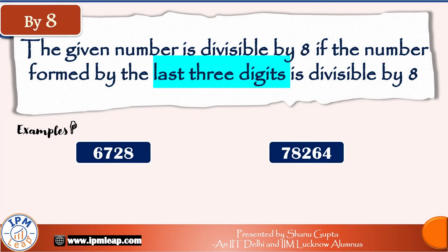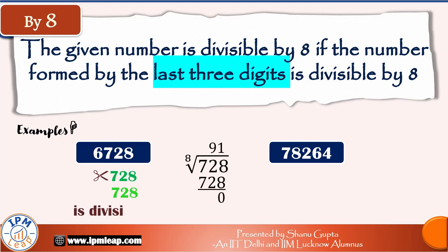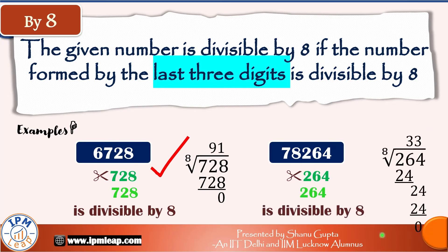The divisibility rule for 8 is similar to 4, but we check the last three digits instead of two. A number is divisible by 8 if the number formed by its last three digits is divisible by 8. For 6728: last three digits are 728, which is divisible by 8, so 6728 is also divisible by 8. For 78264: last three digits are 264, which is divisible by 8, so 78264 is also divisible by 8.